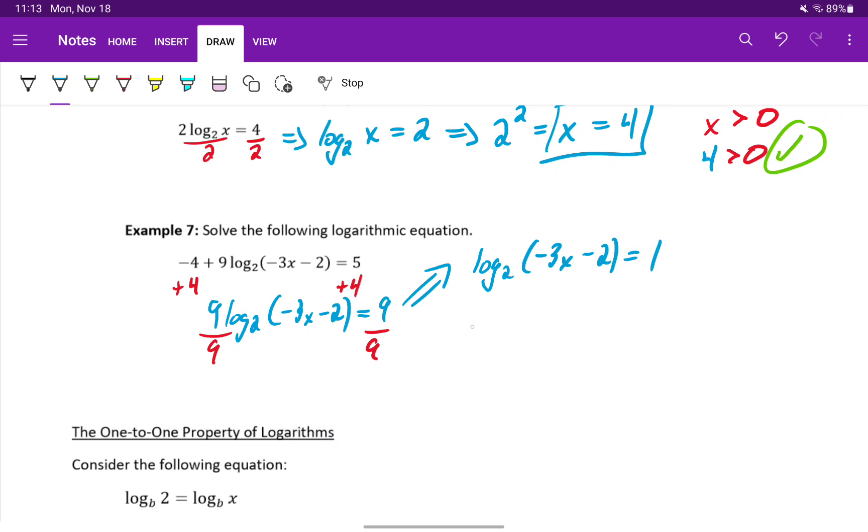Rewriting this in exponential form will give us two to the first power equals negative three x minus two. To solve, we'll add two to both sides which will give us four equals negative three x, and then we'll divide both sides by negative three to get x equals negative four thirds.